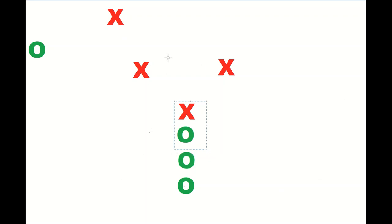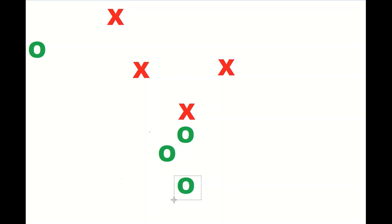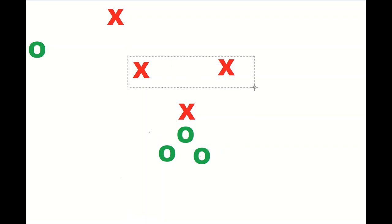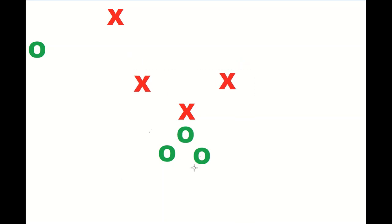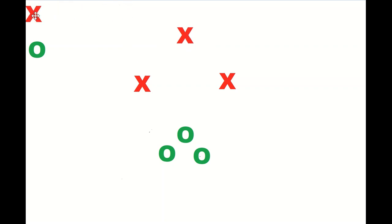When dealing with a bunch formation you can also move away from these man concepts and play zone instead. One of the first zones you'll see played against a bunch is commonly called 'triangle' — named for how the three defensive backs align. I'll move them over here: we have three defensive backs playing a triangle zone.